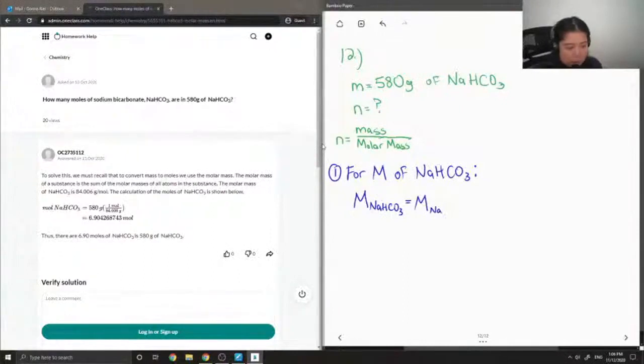So its molar mass is equal to the molar mass of sodium plus the molar mass of hydrogen plus the molar mass of carbon plus three times the molar mass of oxygen, and this is because there are three atoms of oxygen in sodium bicarbonate.